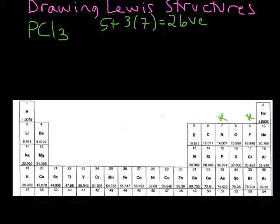The next thing we do is connect the outer atoms to the central atom with a single bond. Let's put phosphorus in the middle here, and we're going to bond each chlorine to the phosphorus with a single bond.